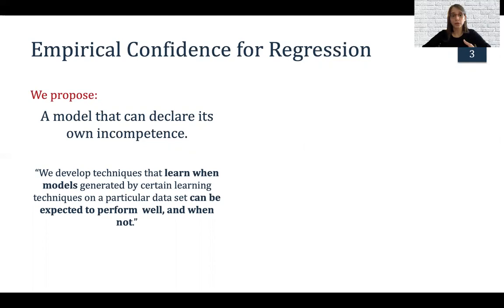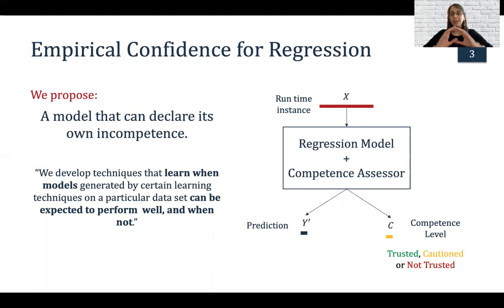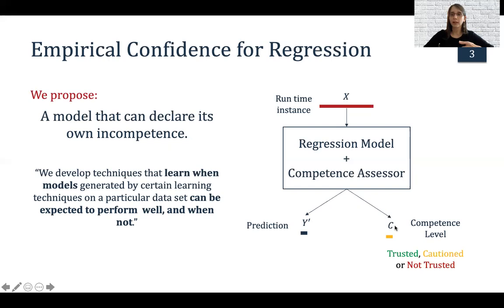As we say in the paper, we want to develop techniques that learn when models generated by certain techniques on a particular dataset can be expected to perform well and when not. We have the following setting: a runtime instance X is given to our regression model but also to a competence assessor. We get a prediction but also a competence level — how much we're going to trust this prediction. We have three classes: trusted, cautious, and not trusted. The idea is to give extra guidance to the user of a machine learning model so they can assess how much to trust the predictions of our regressor.